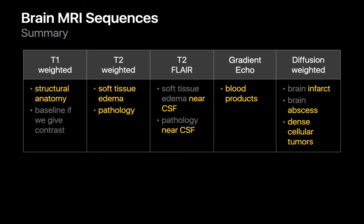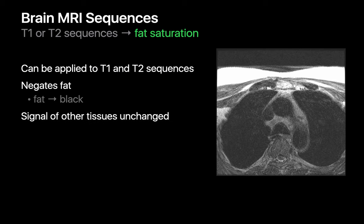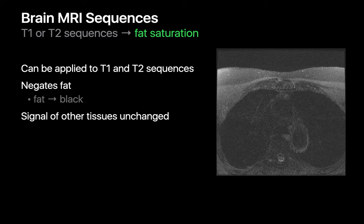Those are the five standard MR sequences we use to study the brain, and the different purposes each tends to serve. Sometimes we may modify the T1 and T2-weighted sequences. We can suppress the signal or brightness of macroscopic fat on T1 or T2-weighted images, making areas of macroscopic fat appear darker while leaving the signal within other tissues untouched. This can be done to confirm the presence of macroscopic fat within an object of interest, or to make the visual interpretation of the non-fat-containing anatomy a little easier.